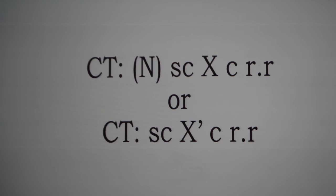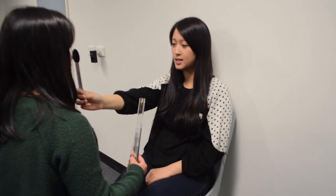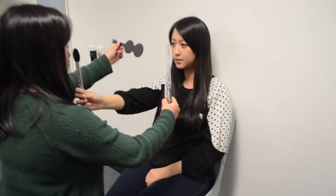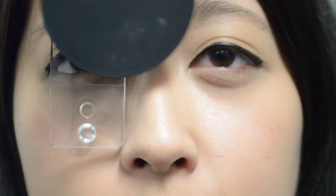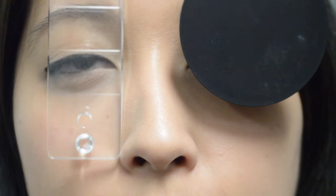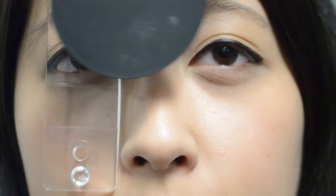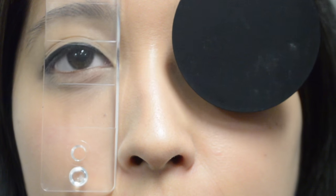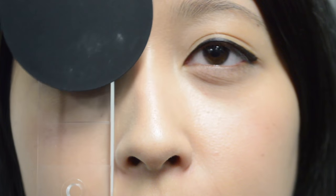Now to measure the size of the deviation, we will perform the prism cover test, also known as the PCT. The prism bar is placed in front of the deviating eye in manifest deviations. As our patient has a phoria, it can be placed in front of either eye.